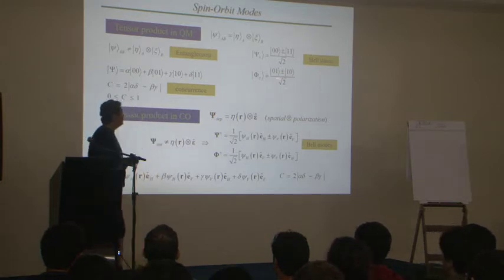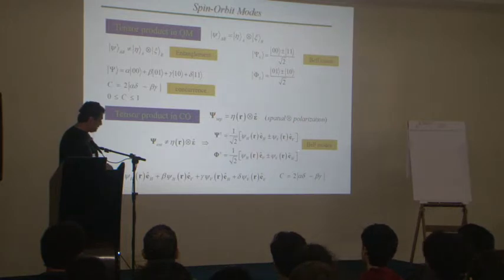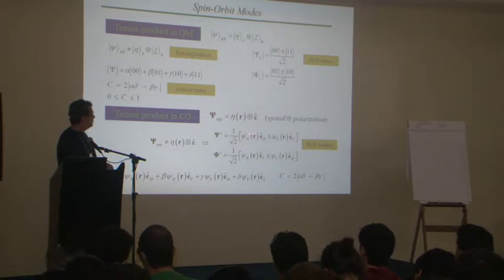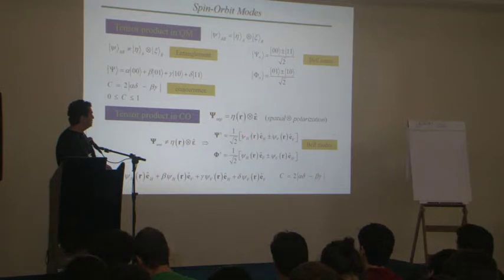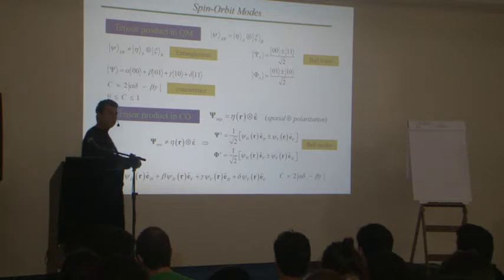And we can even build what would be the analogous to the bell modes, to the bell states, which we call here like bell modes. So this H and V, they refer for Hermite Gaussian modes that are horizontally oriented or vertically oriented. So I have here a combination, a coherent combination between H,H and V,V with plus or minus. And here, combinations of H,V,H with plus or minus. So this form is what would be equivalent to the four bell states that we have over there.